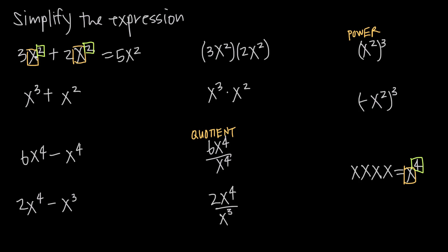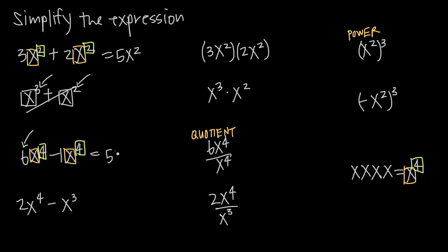For addition and subtraction, the bases and the exponents have to be the same. In this case, x to the third plus x squared — our bases are both x, but our exponents are different: 3 and 2. These are not like terms, so we can't add them together or simplify this at all. For subtraction, we're again looking for similar bases. We have x and x for our base, and exponents of 4 and 4. Because the bases and exponents are the same, we can combine these as like terms: 6 minus an implied 1 leaves us with 5x to the fourth. But if we have x to the fourth minus x to the third, despite having the same base, the different exponents mean we can't combine them — we can't simplify this at all.